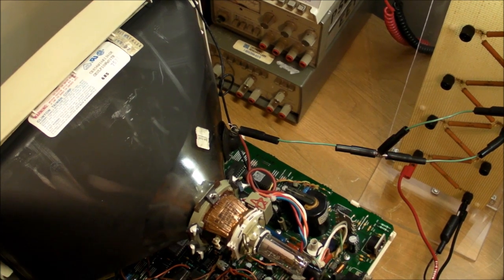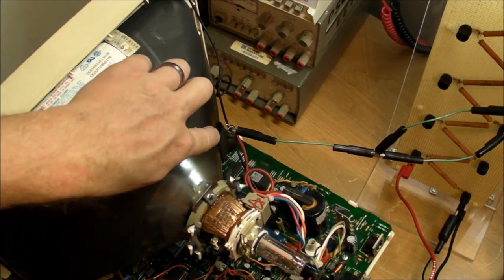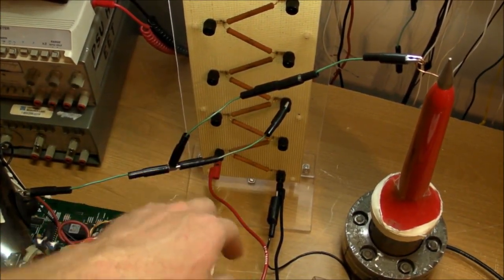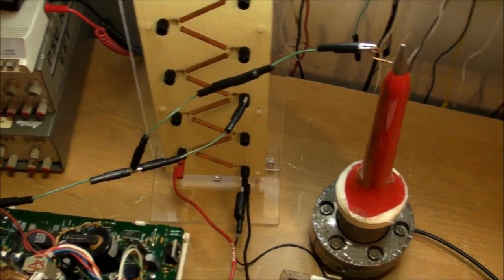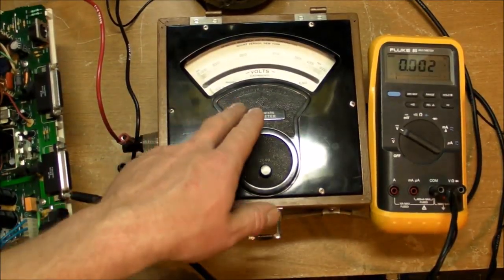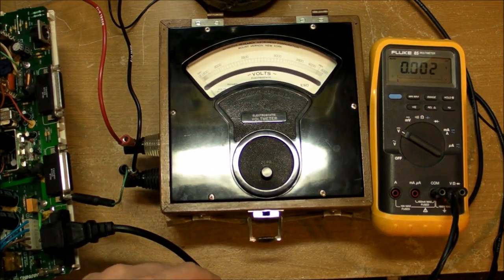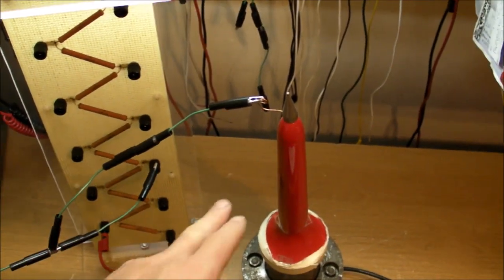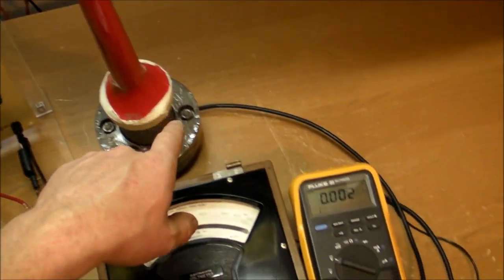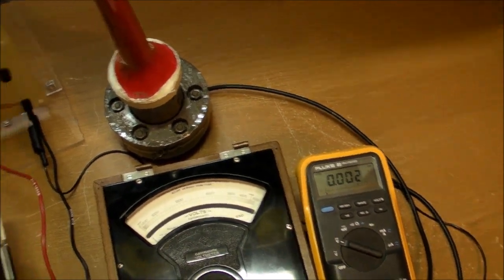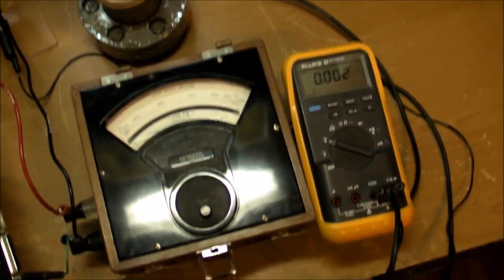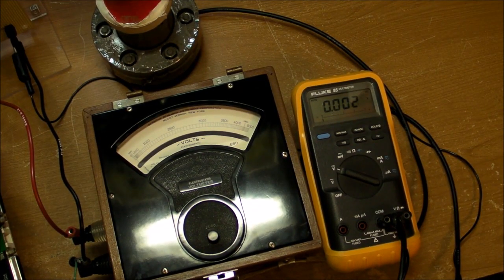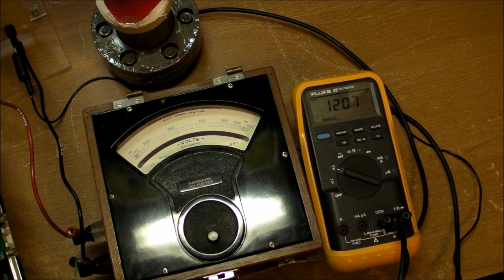Here's the setup. Got the anode voltage coming out right there, going over to my custom network wired as a four to one voltage divider going into the Sensitive Research Instrument Corporation 5 kilovolt electrostatic voltmeter. It also goes to the Keithley one thousand to one voltage divider into the Fluke multimeter down here. Let me train the camera on the two meters, flip the switch and we'll see what happens.